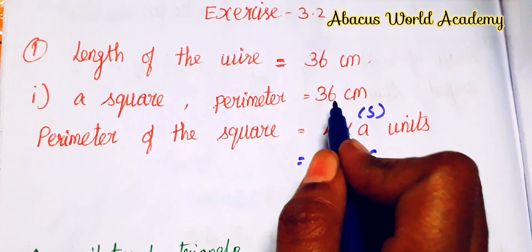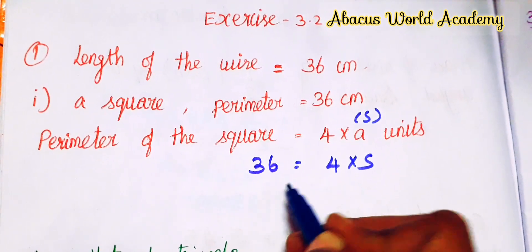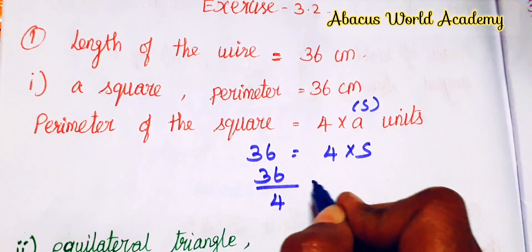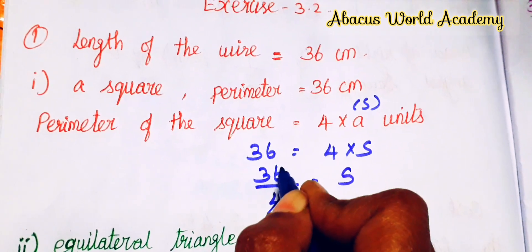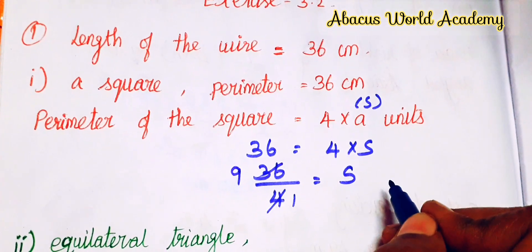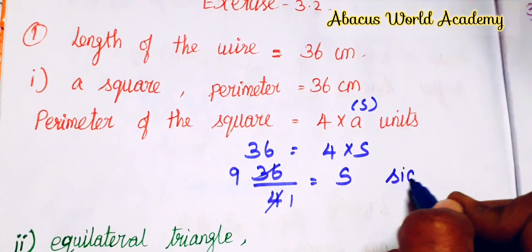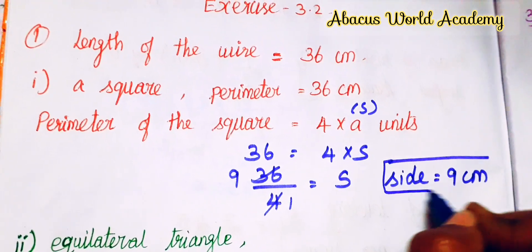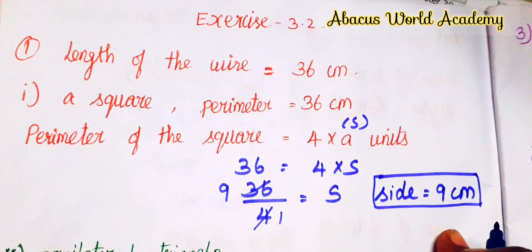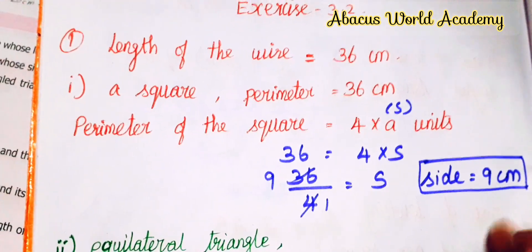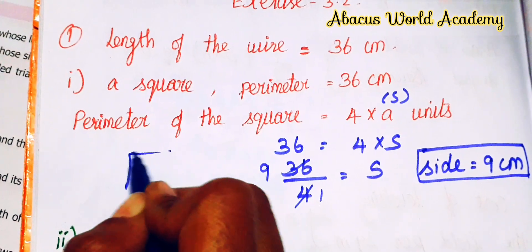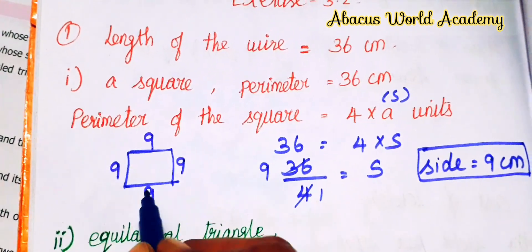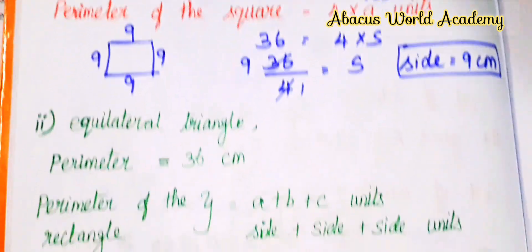Perimeter of the square formula is 4 into side, that is 4 into s. So perimeter equals 4 into s, and total wire is 36. So, 36 divided by 4 gives us the side. 4 into 9 is 36. So, side is equal to 9 cm. The square has 4 sides each of 9 cm, and 9 times 4 equals 36. Clear?